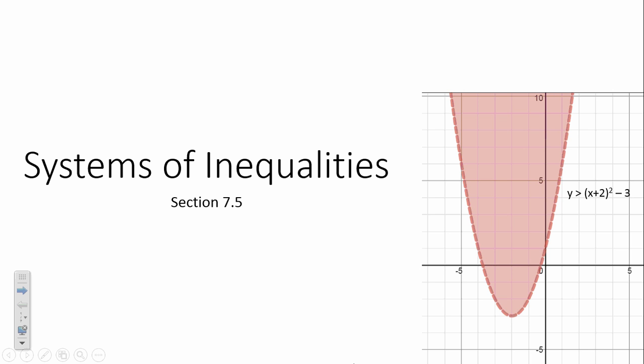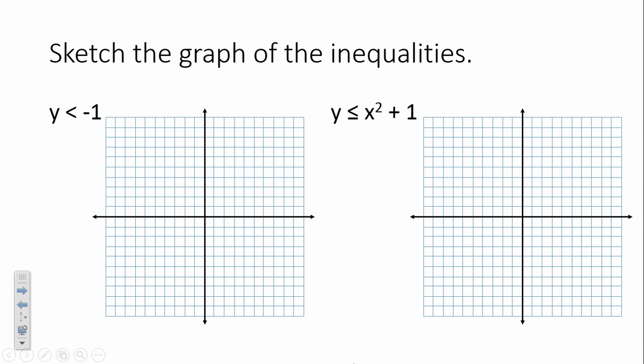We're starting with systems of inequalities. Start with the first one on your sheet and we're going to graph a very basic inequality: y is less than negative 1. Since it's a single variable with y, this gives us a horizontal line.